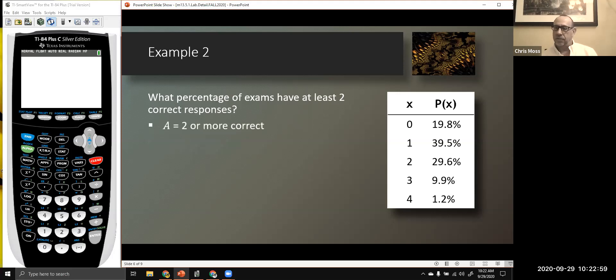In this case, the event A is two or more correct. Two, three, or four fall into that category. So the percentage of outcomes with those correct responses can be found by summing those percentages, 40.7%.